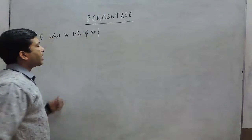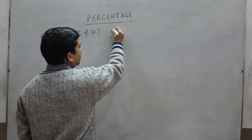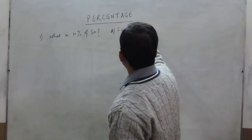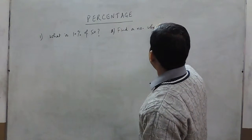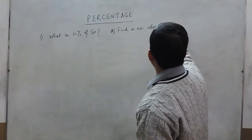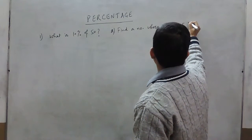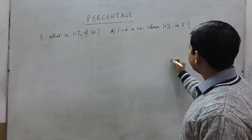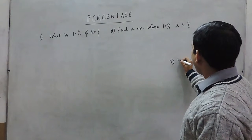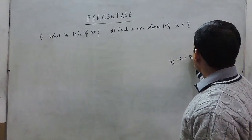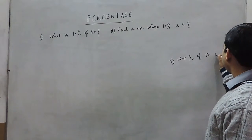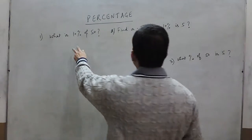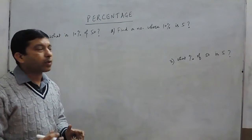What is 10% of 50 — that is the first question. The second question is: find a number whose 10% is 5. The third question is: what percent of 50 is 5? These three questions are different, but when we talk about basic percentage questions, the concept behind all three is the same.